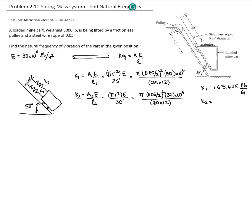K2 gives me a value of 196,350 pounds per inch.